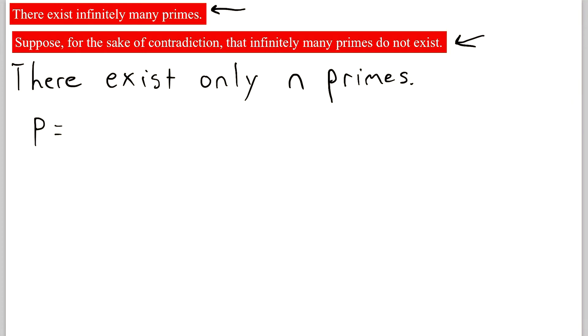So now let's consider a number we'll call P, and P is equal to this product, the first prime that we'll call P1, multiplied by the second prime P2, multiplied by the third prime P3, all the way up to the last prime, which we know is Pn, because there exists only n primes, and then add 1 to that product. So this is our number P. It's the product of every prime that exists plus 1.